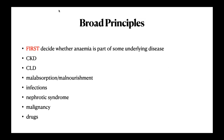When approaching a patient, first decide whether the anemia is part of some underlying disease. This will be very apparent — for example, chronic kidney disease, chronic liver disease, malabsorption, malnutrition, infections, nephrotic syndrome, malignancy, or drugs. Here, anemia is part of the underlying disease, and a particular disease may cause anemia by multiple mechanisms: decreased marrow production, increased RBC destruction, sequestration in the spleen, or loss from the body. If the disease is obvious, treat the disease and the anemia will be treated.